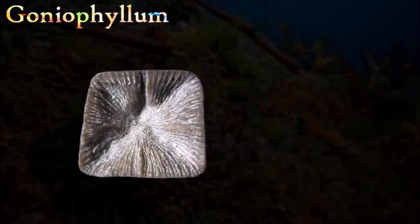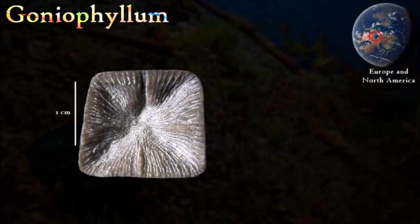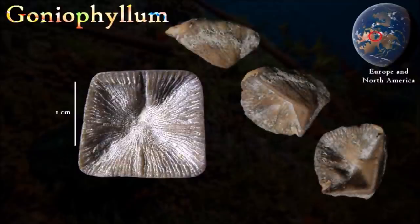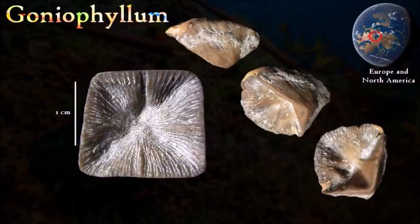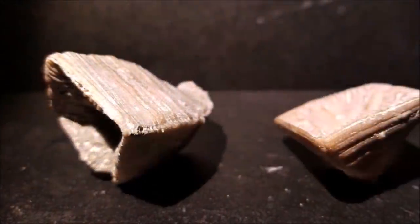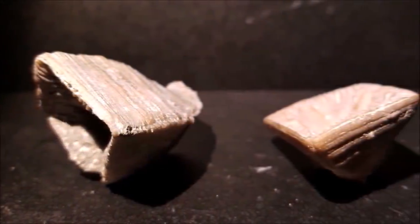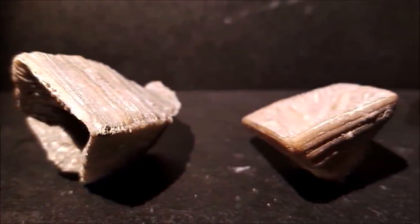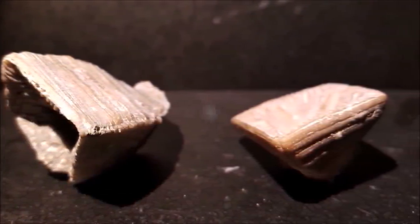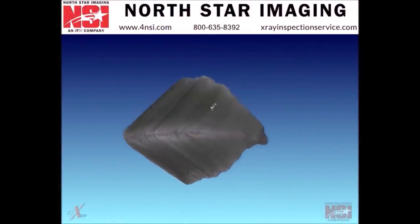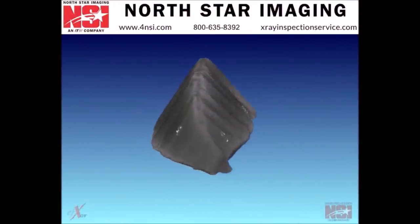Goniophyllum is a solitary rugose coral with a distinctive four-sided top section. The soft-bodied coral polyp lived in a concave cavity called a calice. A lid-like structure, or operculum, made of four thick triangular plates covered the calice, though this is not usually preserved in fossils. Contracting muscles shut the lid so that the polyp was protected when not feeding.